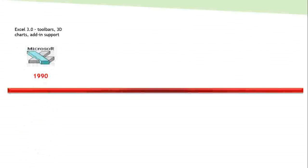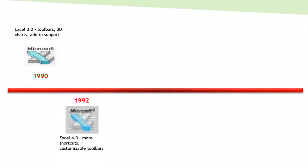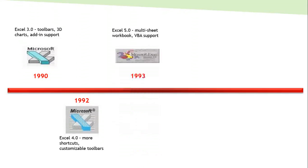In 1990, Excel 3.0 came up which had 3D charts and add-in support — so add-ins all started from 1990. In 1992, version 4 of Excel came up which had more shortcuts and customizable toolbars. In 1993, version 5 of Excel came up and it had the first VBA support, so VBA in Excel started from 1993.